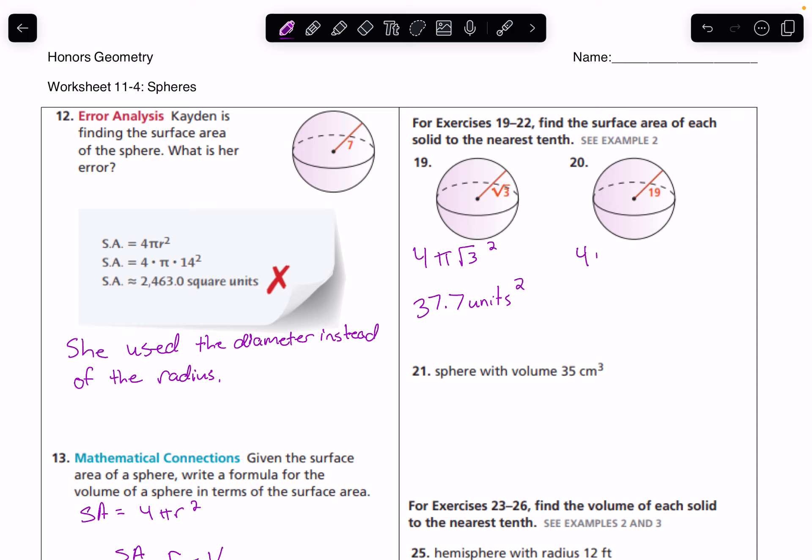For 20, that's 4π times 19². And as a decimal to the nearest tenth, that's 4,536 units².